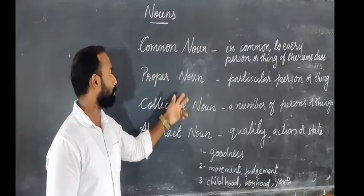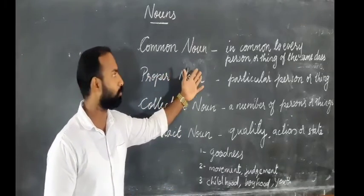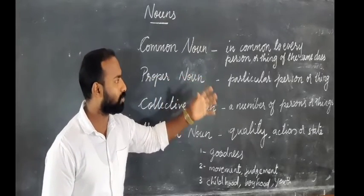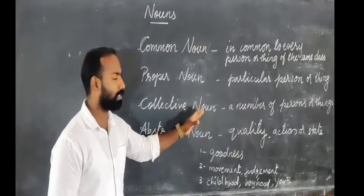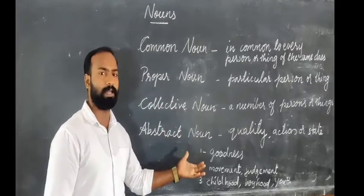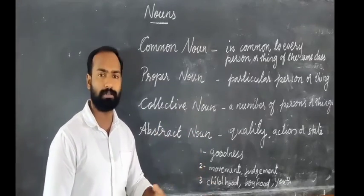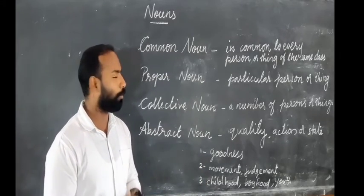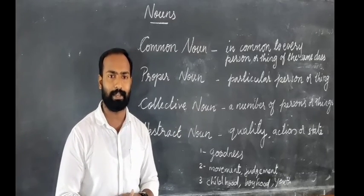So we have covered: Common Nouns — nouns used in general, in common. Proper Nouns — used for a particular person or particular thing. Collective Nouns — used for a group of persons or things. And Abstract Nouns — referring to the quality, action, or state of something apart from the object to which it belongs. Hope it is very clear. Keep in mind all these kinds of nouns. We will see you in the next class — till then, check it out.